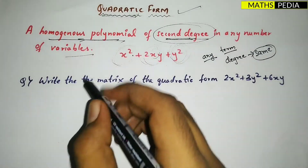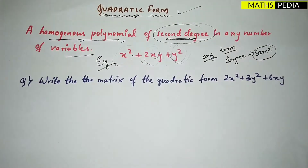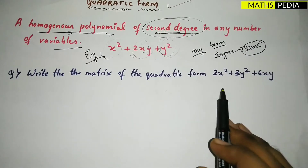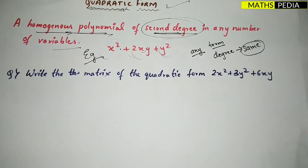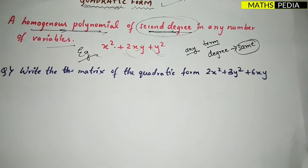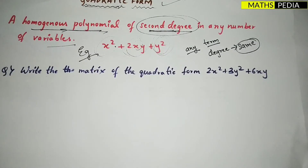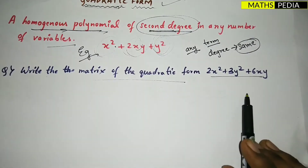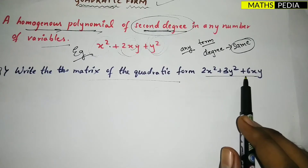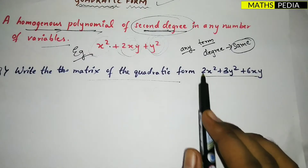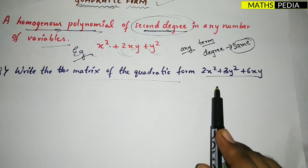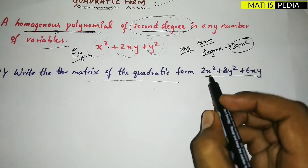There are two kinds of questions: one where they give you the equation and ask you to form the matrix, and the other way around. For example: write the matrix of the quadratic form 2x² + 3y² + 6xy. You can see each term has degree two, so you need to form the matrix.